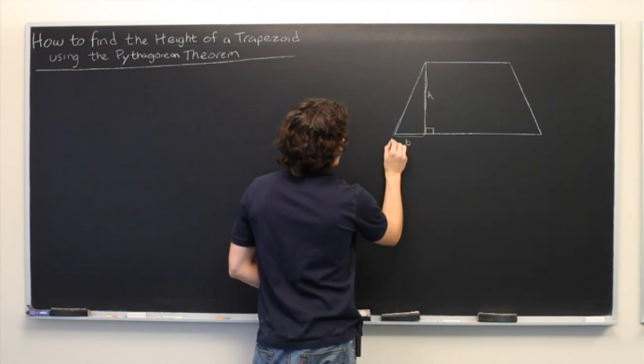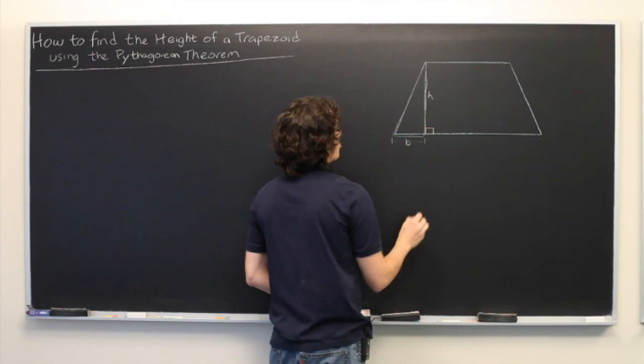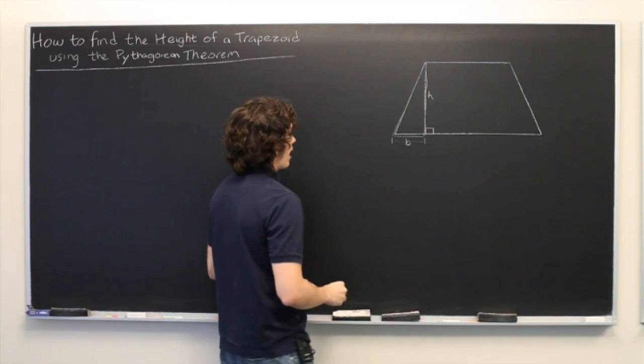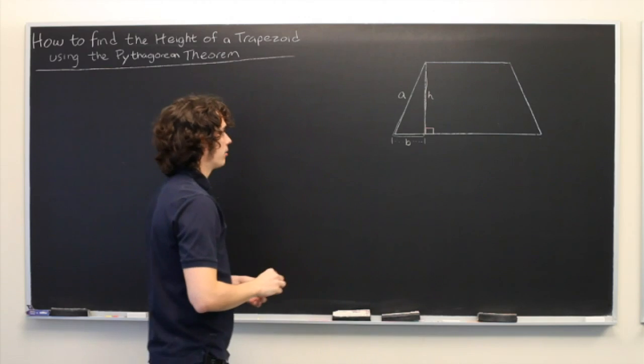the length from this vertex to the point where the altitude crosses the base. And assuming we also know the length of this side, which we'll just call A. A for awesome.